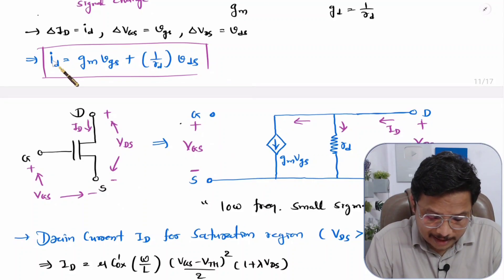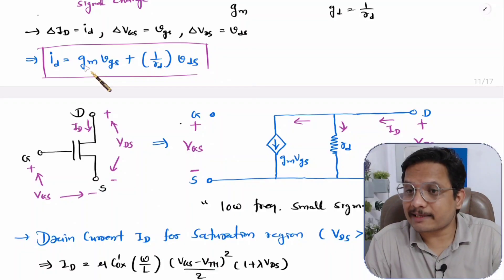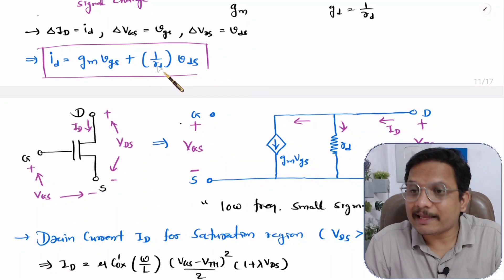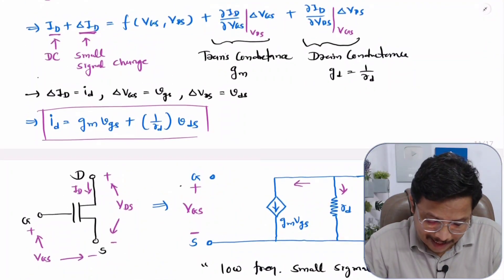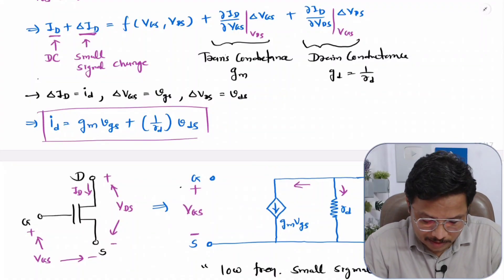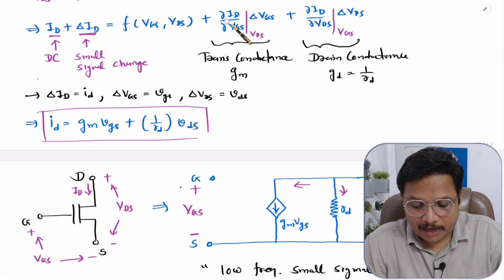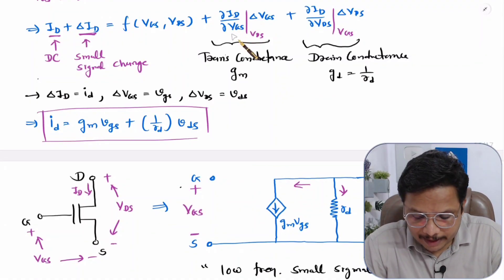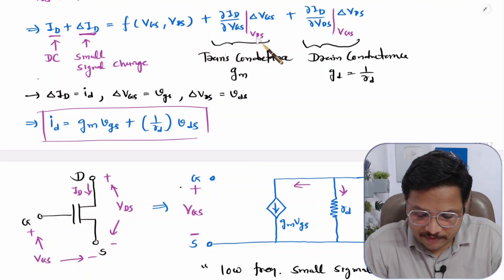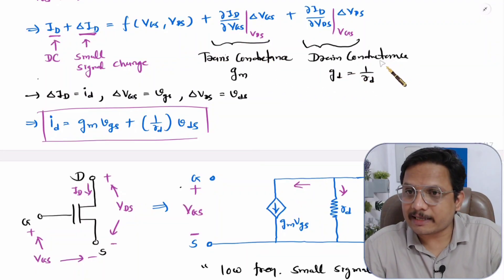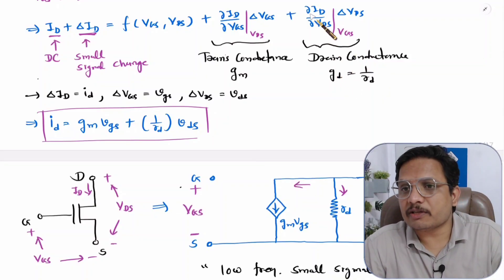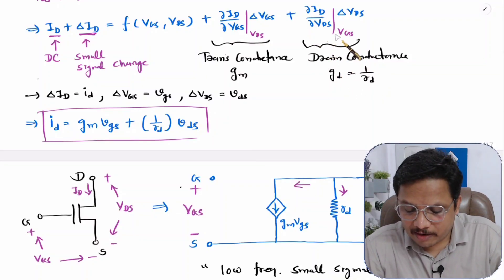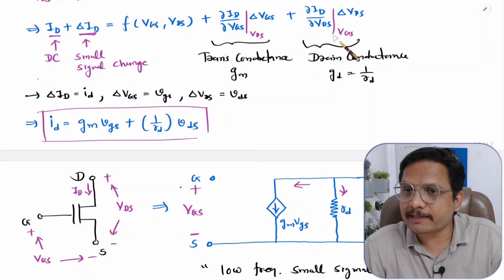In this drain current equation, GM is transconductance and RD is drain resistance. GM is the partial differentiation of drain current with respect to VGS, keeping VDS constant. Drain conductance, which is 1/RD, is the partial differentiation of drain current with respect to VDS, keeping VGS constant.